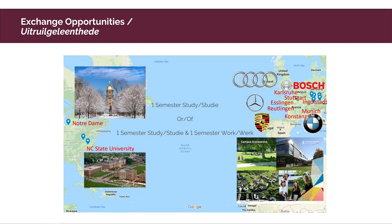I want to end by telling you about exchange opportunities in our program. In the third year, you can do a semester exchange to one of our partner universities in America, studying similar subjects with a credit transfer back to South Africa. Or you can take a gap year after your third year and go study at one of our partner universities in Germany, followed by a semester working in industry in that area. This is a fantastic opportunity to broaden your perspective and gain an international view of engineering.